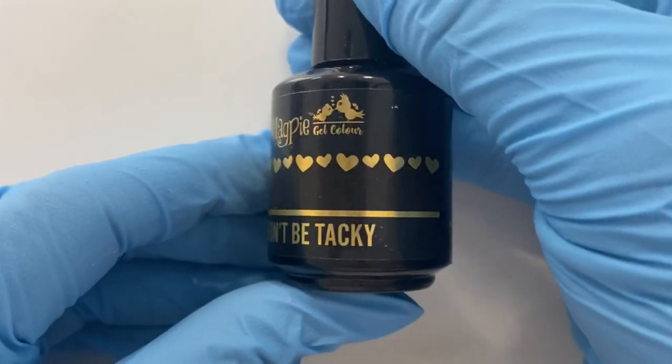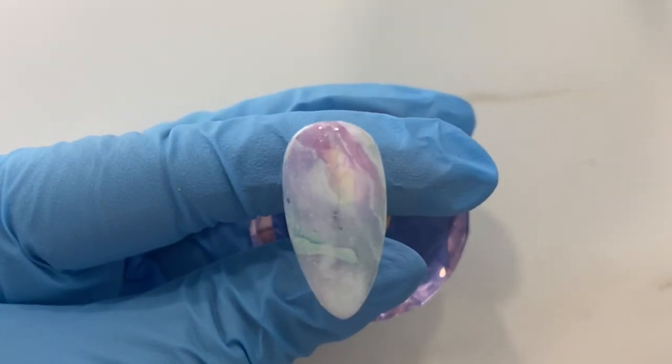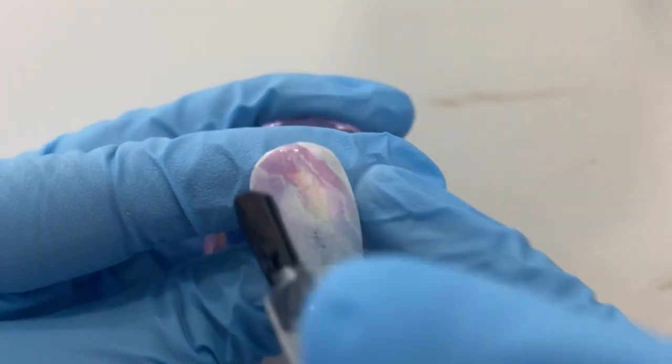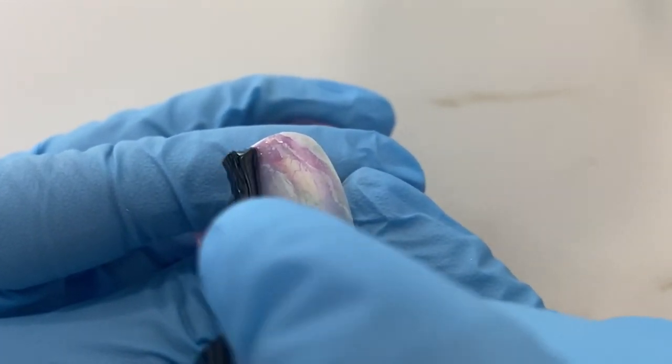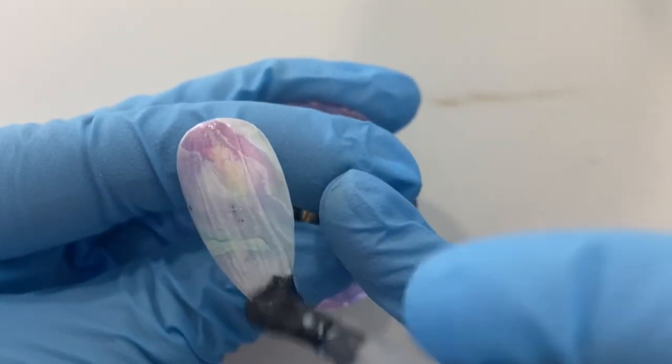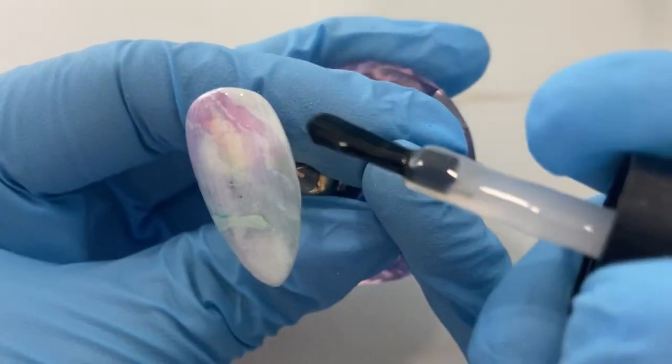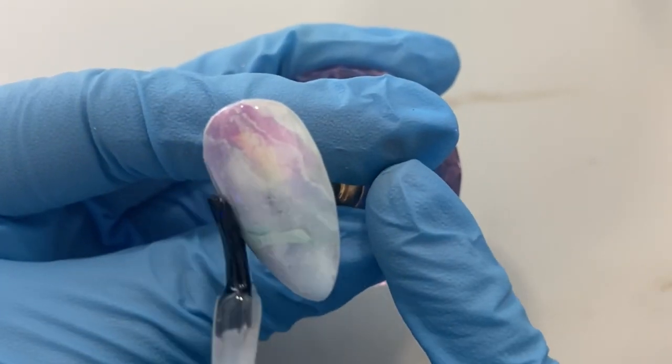Our final step to finish off our look is by using a top coat. For this I've decided to use Don't Be Tacky, but you're welcome to use Shine Bright or Like a Diamond also as one of your top coats. I'm going to apply a nice thin coat and make sure I also cap this coat as well before I put it into the lamp for 60 seconds to cure.